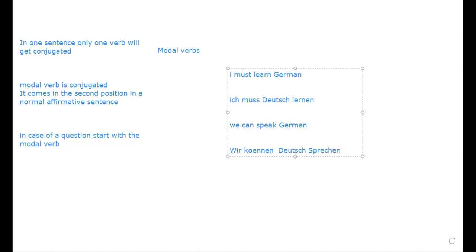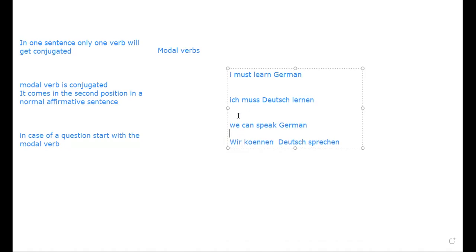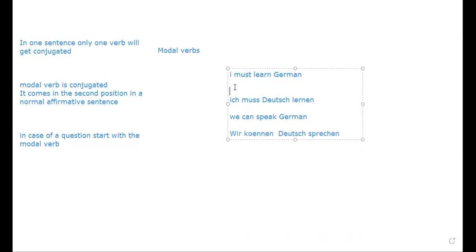'Wir können Deutsch sprechen' — we can speak German. The second verb 'sprechen' goes to the end of the sentence and does not get conjugated. This is the core rule: in a sentence with a modal verb, only the modal is conjugated, and the second verb goes to the end in its infinitive form.